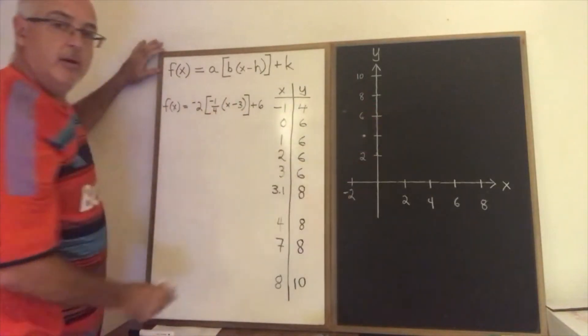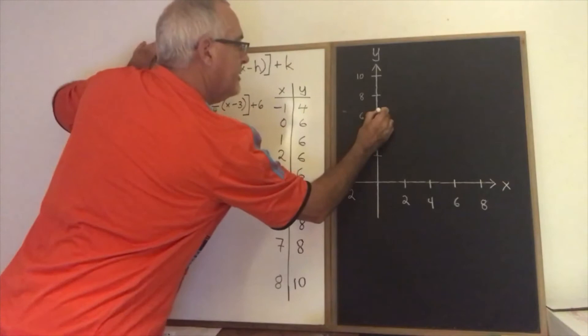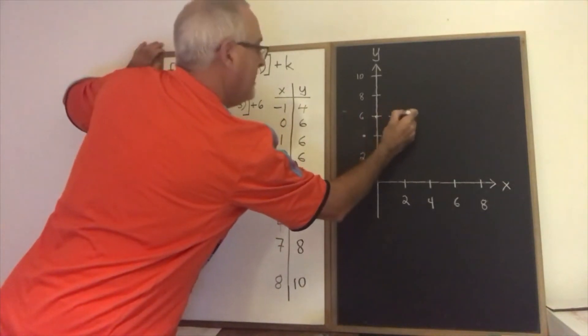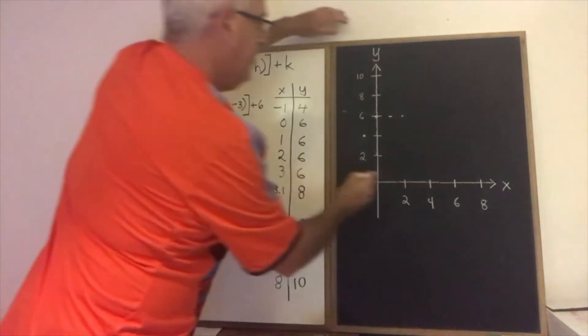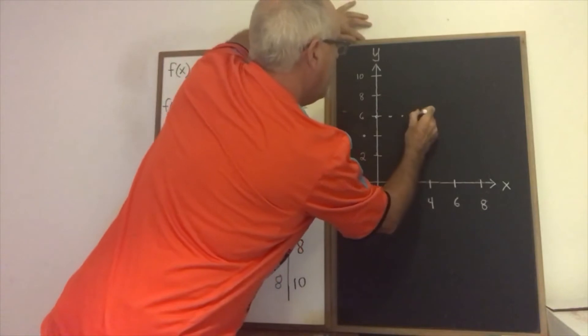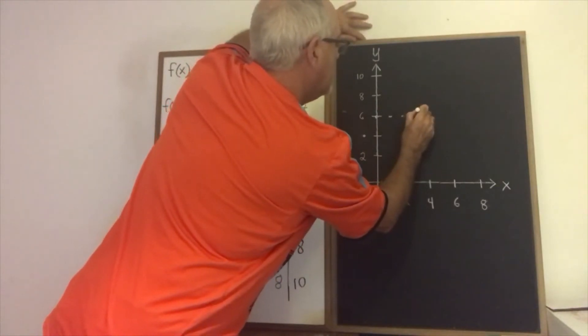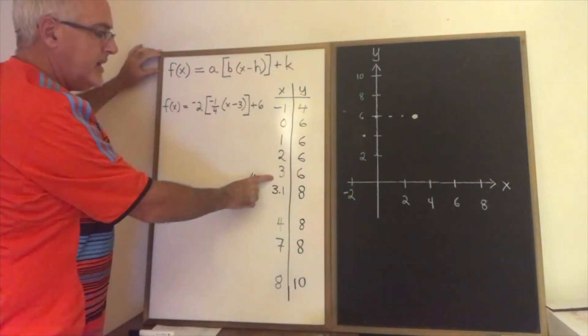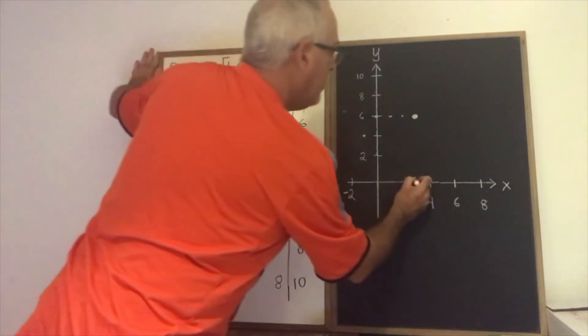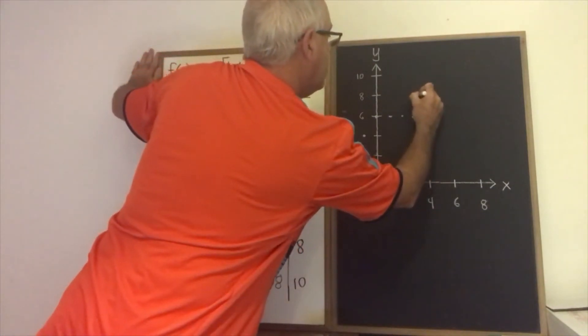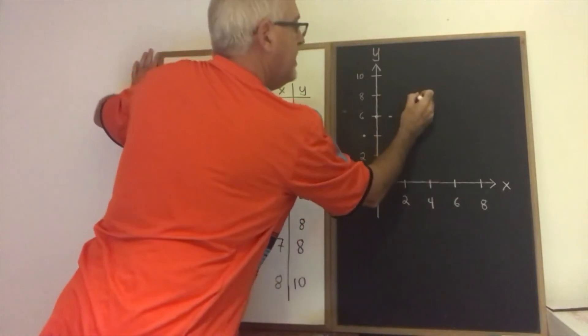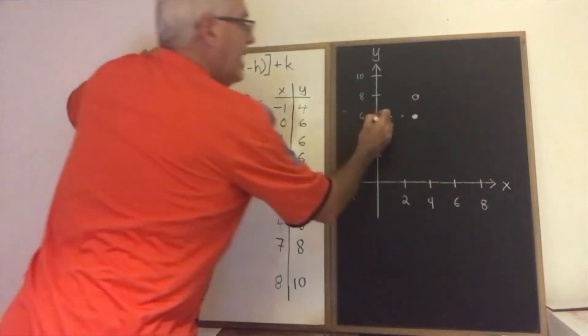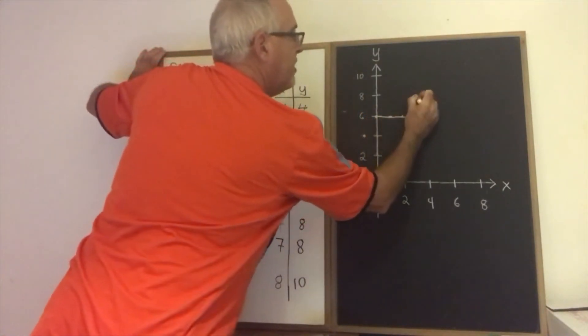I'm going to catch up on putting my dots on the graph now. 0, 6 is here. 1, 6. 2, 6. 3, 6. And that's where I know I need a closed circle. Because as soon as I go past 3 on the x axis to 3.1 I'm getting a point where y is 8. So that tells me I need an open circle right there. And I can start drawing in my step, drawing in my bar.